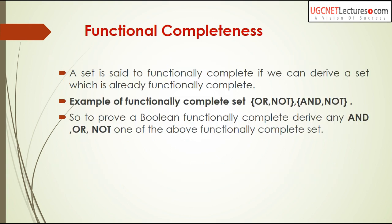A set is said to be functionally complete if we can derive from it a set which is already functionally complete. For example, you have AND, OR, NOT as a functionally complete set, and from this you can derive another functionally complete set like NAND, NOR, or {XOR, 1, AND, NOT}. If you are deriving a set from a functionally complete set, then the derived set will also be functionally complete. For example, OR and NOT is functionally complete — from OR and NOT you can derive AND. From AND and NOT you can derive OR.